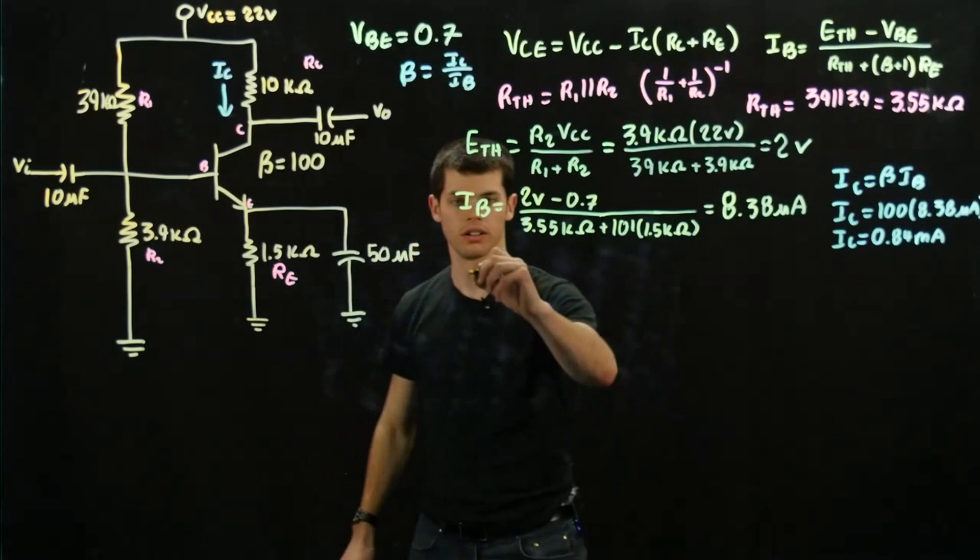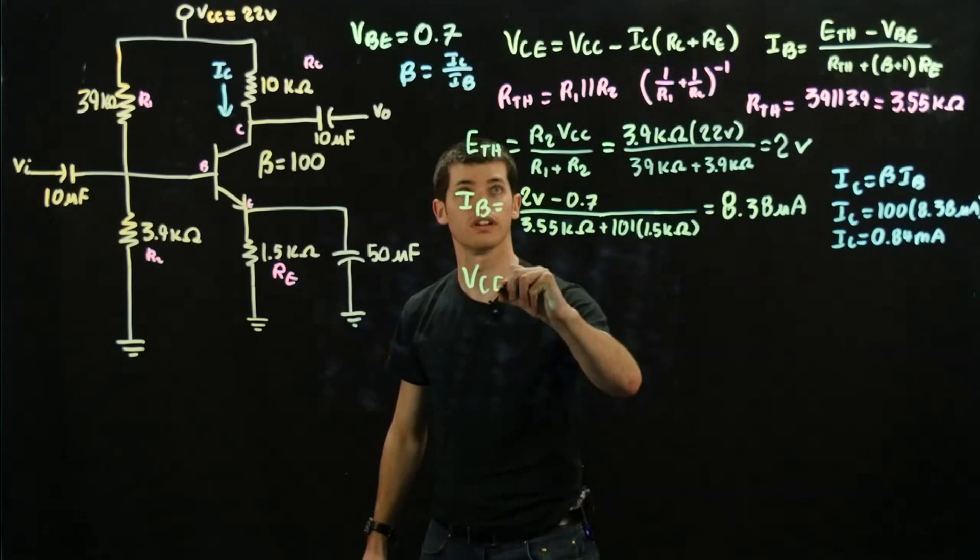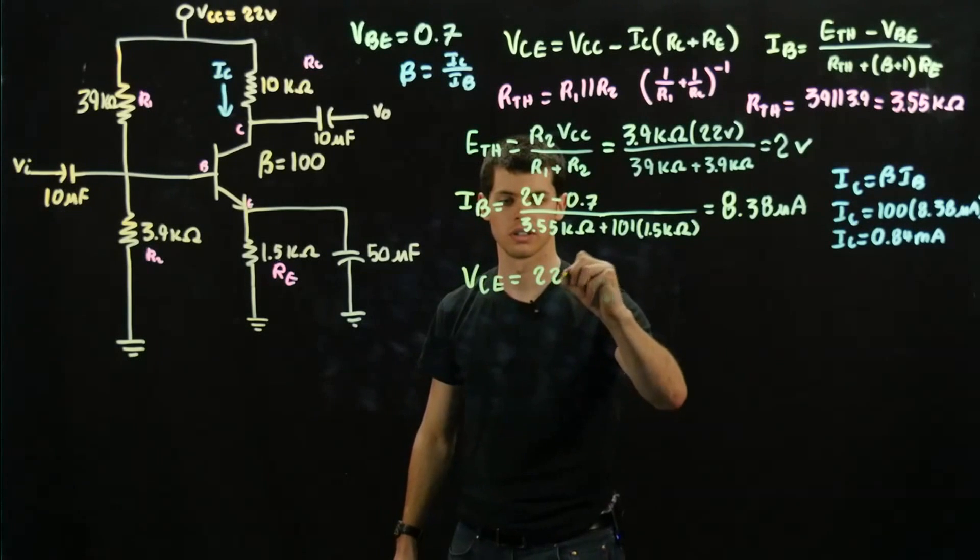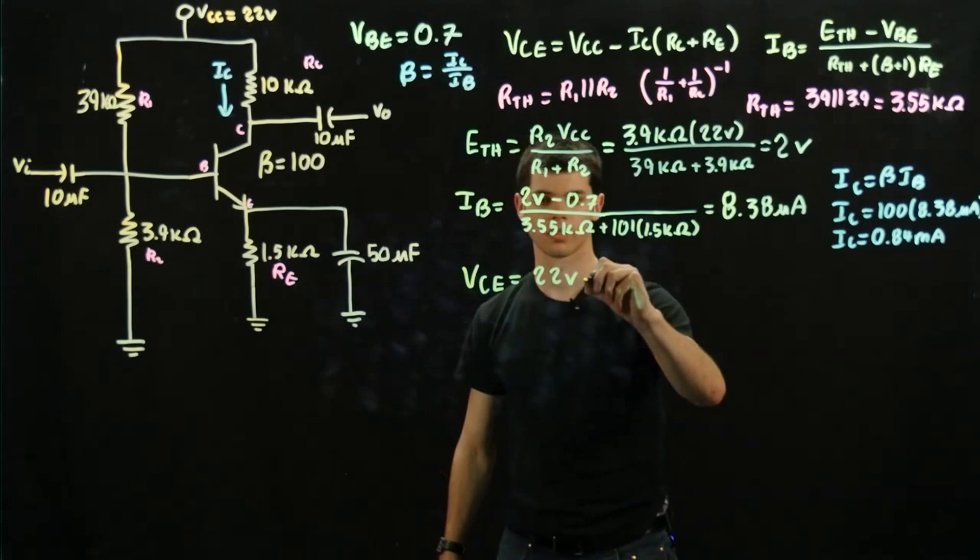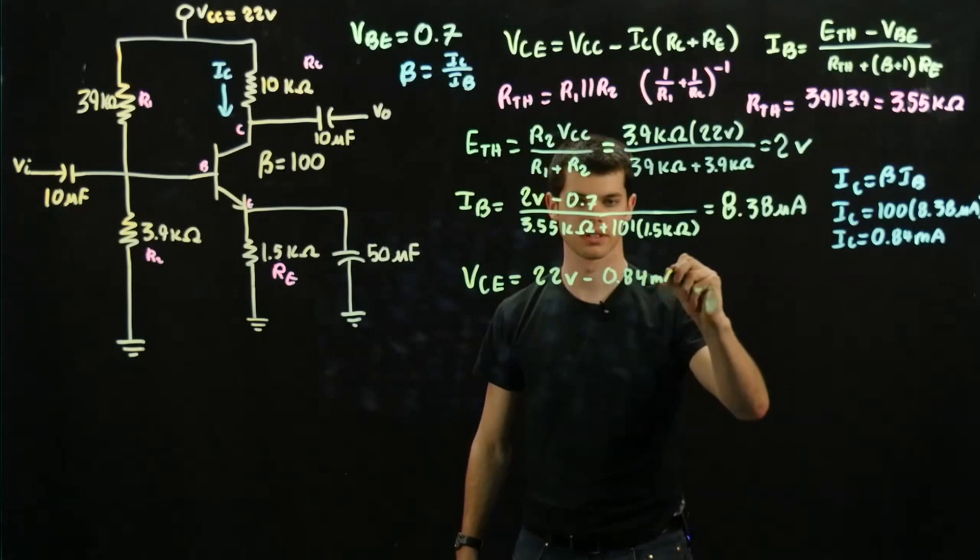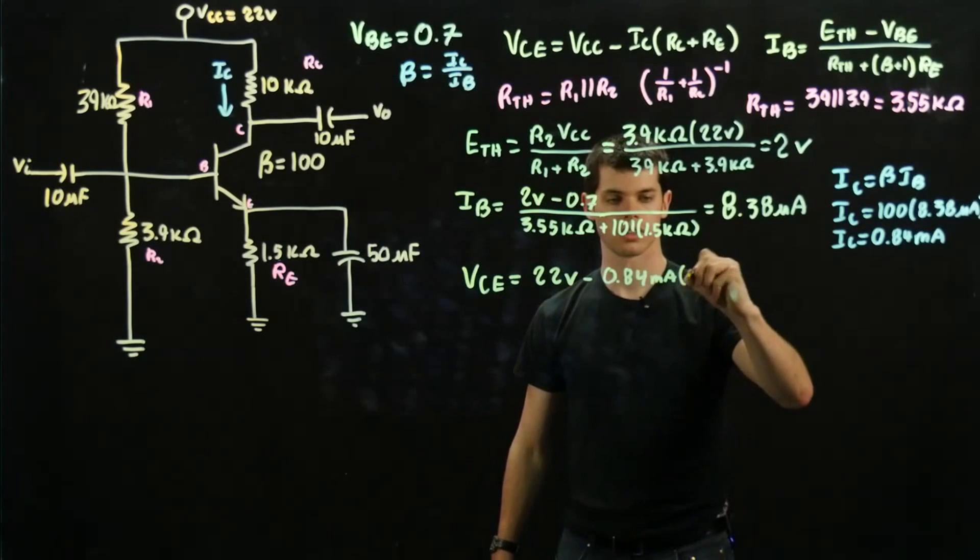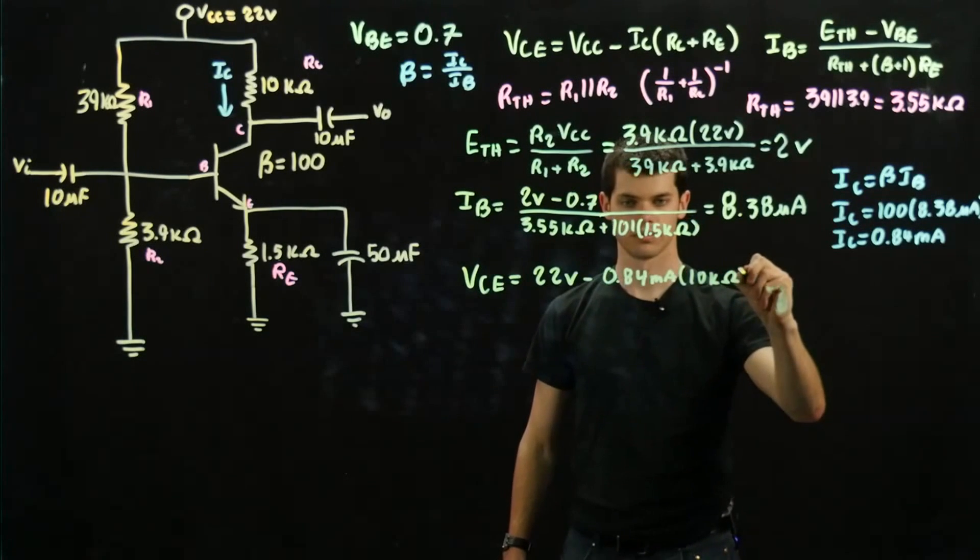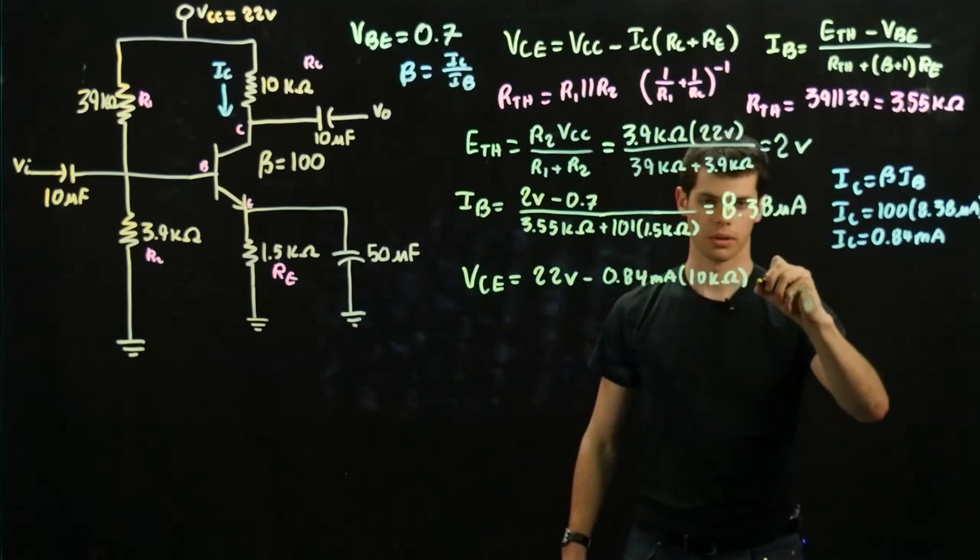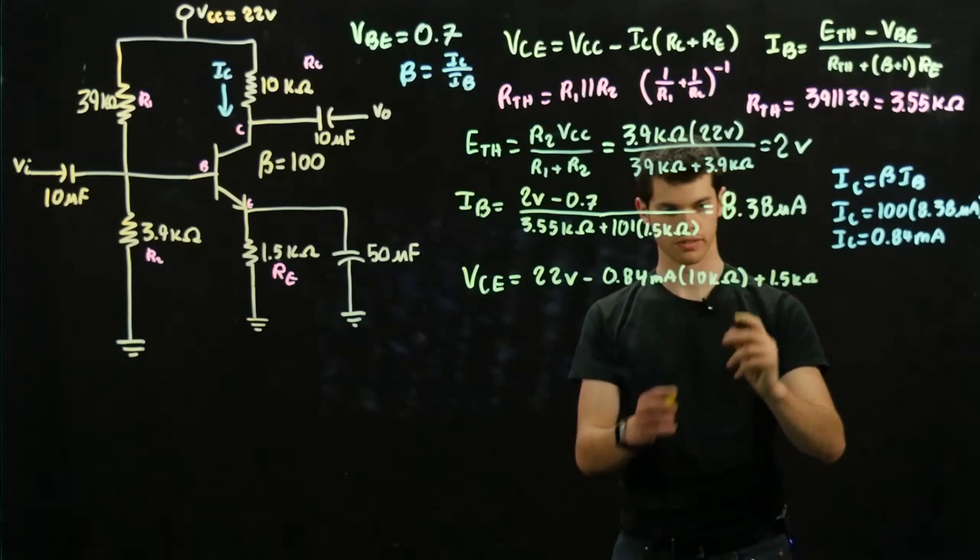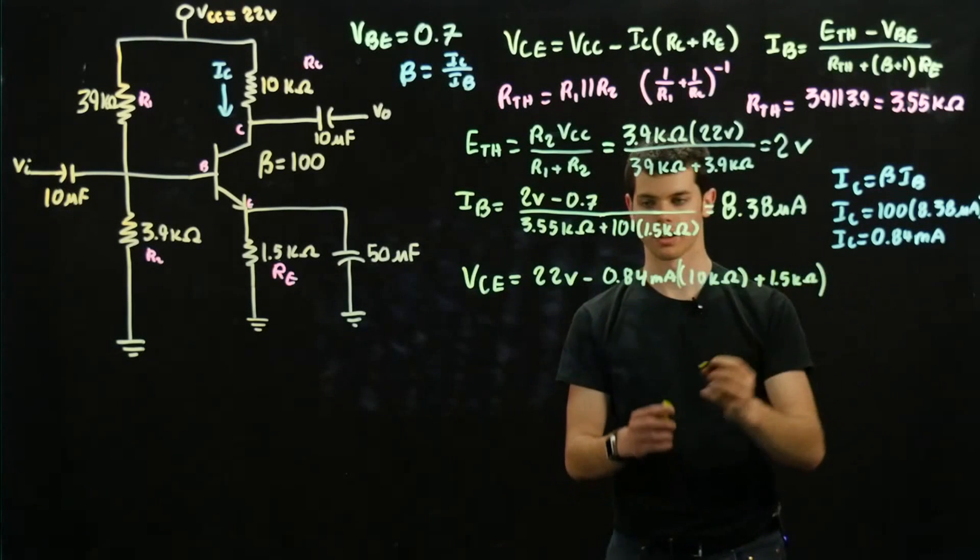So home stretch now. VCE is equal to 22 volts minus 0.84 milliamps times 10 kilo-ohms, and we're going to add 1.5 milliamps. Just a little bit of fix here, sorry about that.